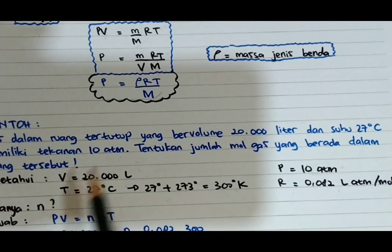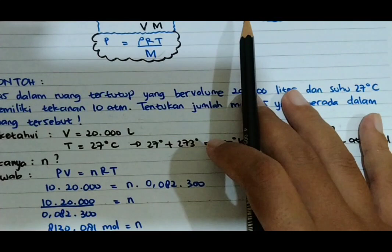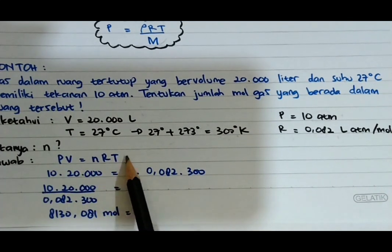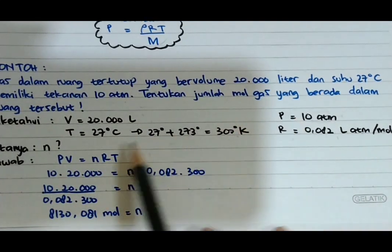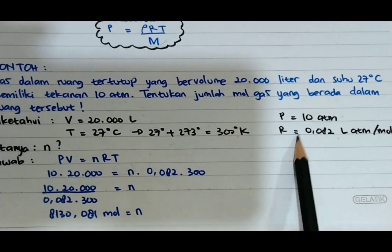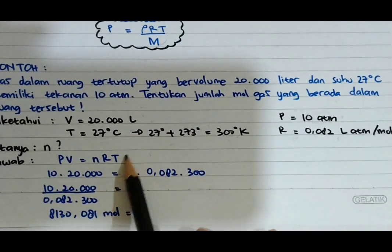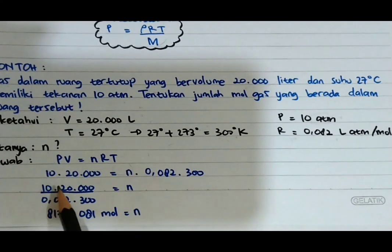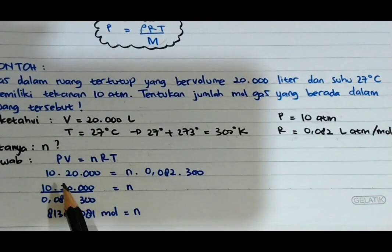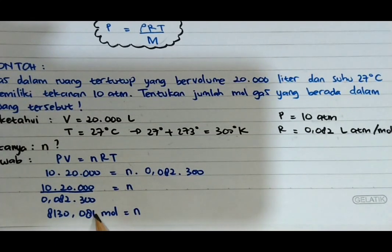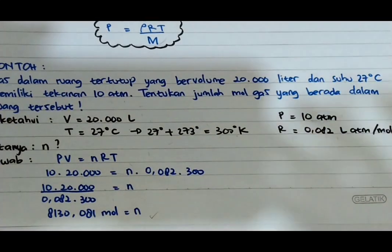Yang ditanya adalah jumlah mol N kecil. Kita bisa menggunakan rumus PV sama dengan NRT. P nya 10, V nya 20.000, N kita cari, R nya 0,082, T nya 300. Maka N merupakan 10 × 20.000 dibagi (0,082 × 300), maka ketemu 8130,081 mol merupakan jumlah molnya.